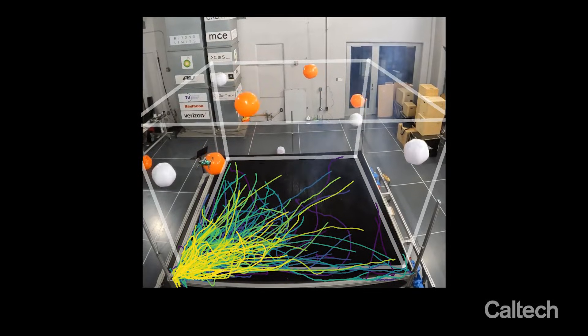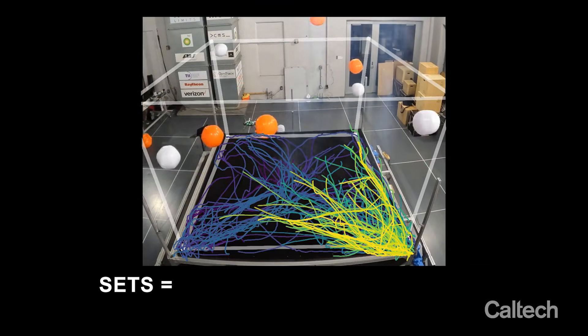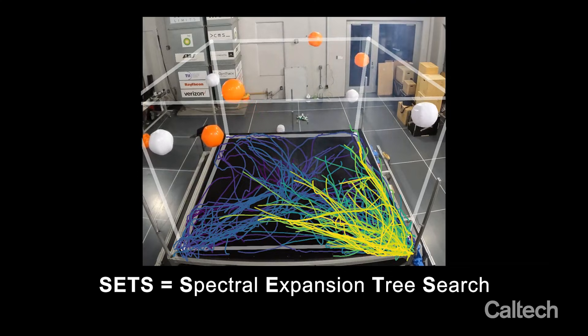By considering a decision tree over possible actions, SETS discovers an optimal path between the targets.